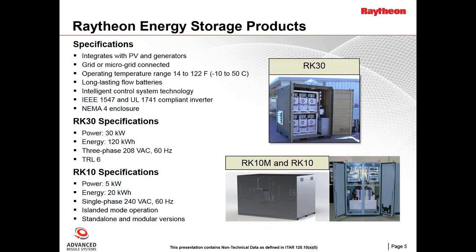General specifications for both the RK10 and RK30: they easily integrate with various power sources including PV, wind, generators, and the grid, and can support numerous applications. They can be connected to the grid or in a microgrid configuration, with a temperature range of minus 10 to 50 degrees C. The flow batteries have a long life — currently over 1,200 cycles. The control systems monitor temperatures, voltages, currents, and battery cycling. The inverters are grid-capable with IEEE 1547 and UL 1745 compliance. All enclosures are NEMA 4 rated. The RK30, housed in a Tricon, supplies 30 kilowatts with 120 kilowatt-hour capacity at 208 volts three-phase 60 Hz, and has met TRL 6 specs.